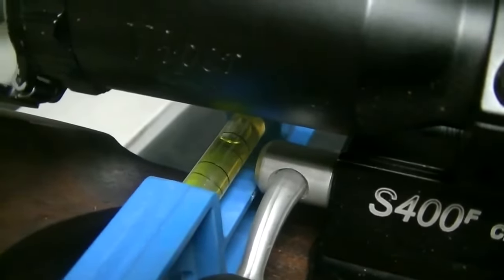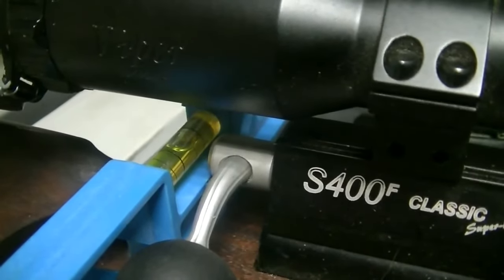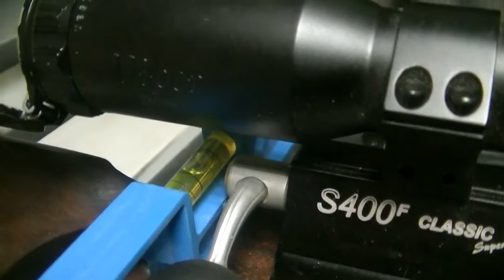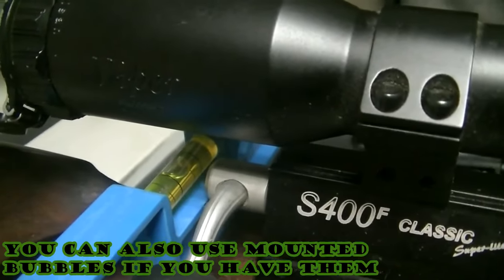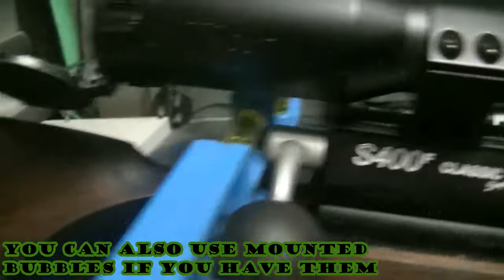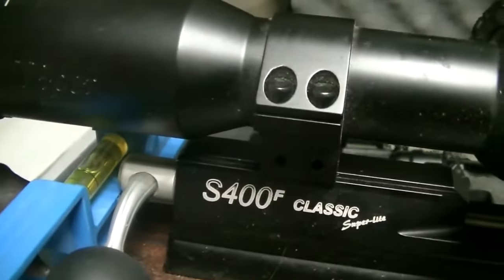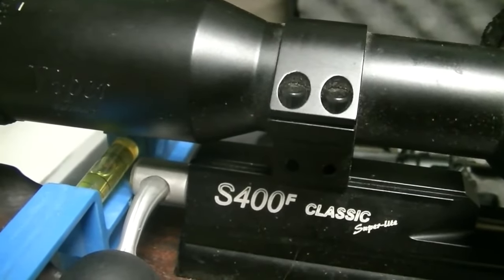So basically I'm just going to put the spirit level on the back there, adjust the scope until the bubble shows that the gun is completely squared like that, and then fix it in that position.